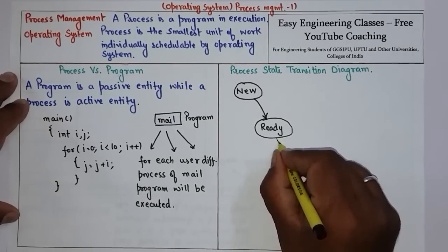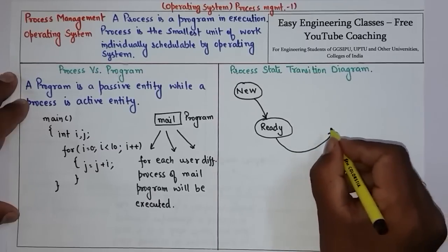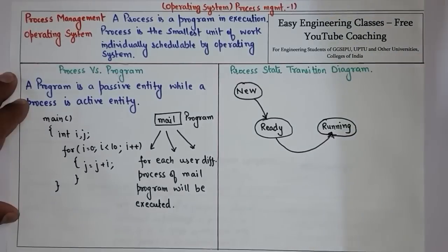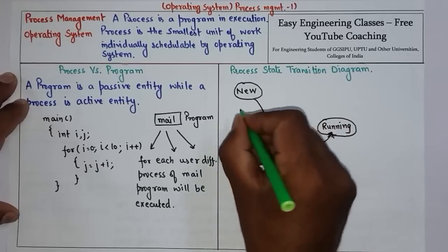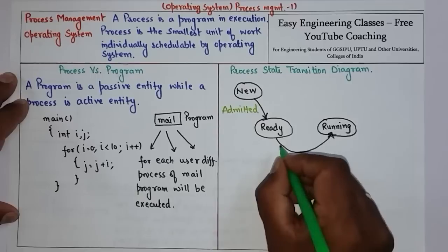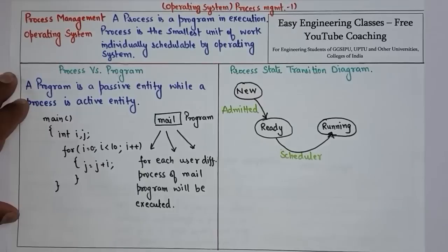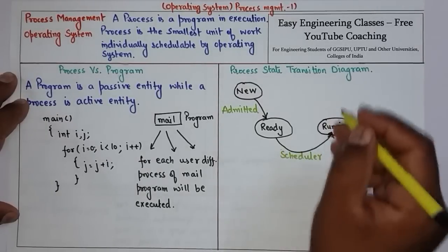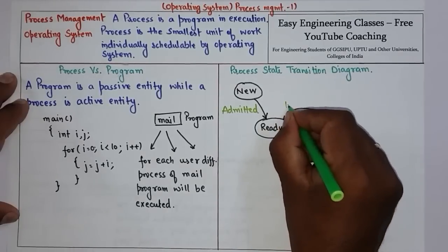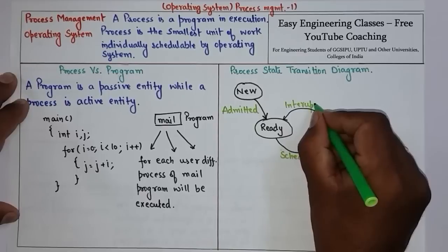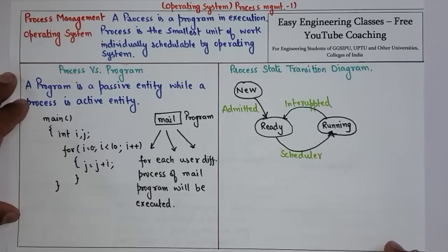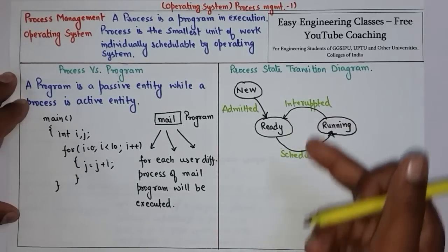Once the scheduler selects the process, it goes from the ready state to the running state, because the process is now being run by the scheduler. From admitted, the process becomes ready; then if it is picked by the scheduler from the ready state it goes to the running state. Now if a running process is interrupted for some reason, the process again goes back to the ready state — that is an interruption. Interruption can be of many types, for example when a process needs some file or resource to be allocated before completion and is waiting for that particular resource.